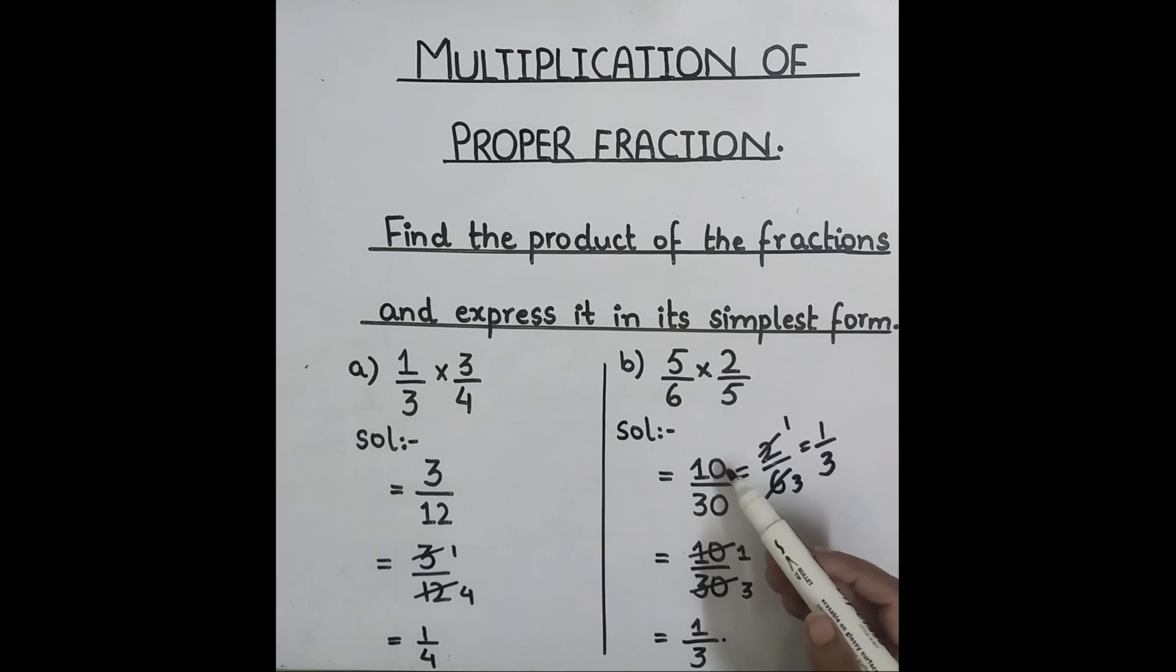Like when you cut the fraction on the table of ten, the answer was one over three. And when you choose to simplify the fraction on the table of five, the answer is also one over three. So there is no impact of table. Just make sure to cut numerator and denominator on the same table.